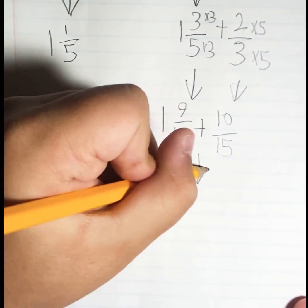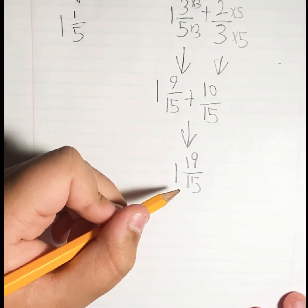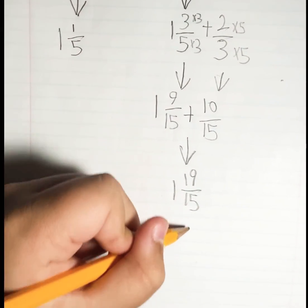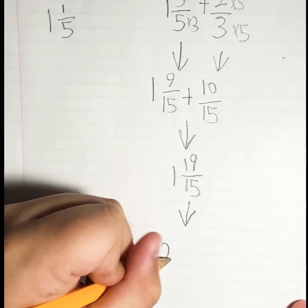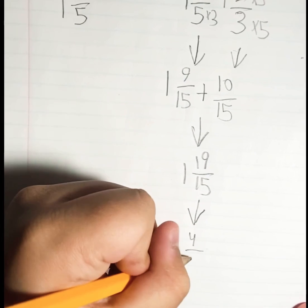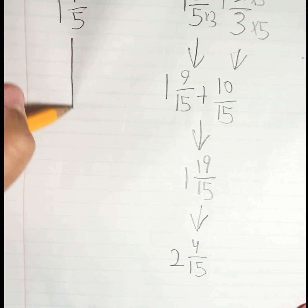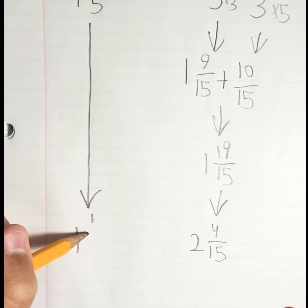Now we add them up, which is 1 19/15. So over here we have to simplify because 19 is bigger than 15. So let's simplify this down here to 2 4/15. So now we have to bring this one all the way down here: 1 1/5.